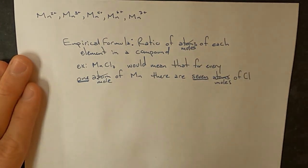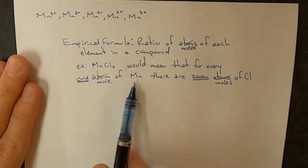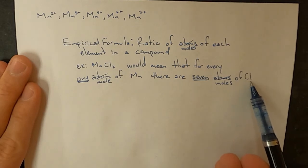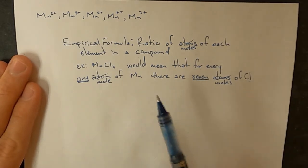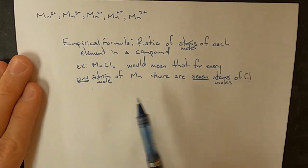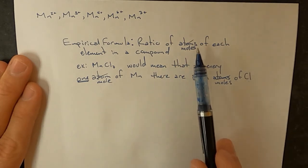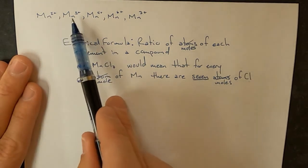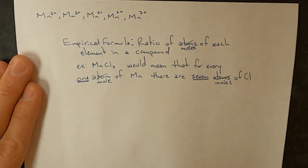And what that means is we could measure the mass of manganese in our compound that we created, and we could measure the mass of chlorine in our compound that we created, and we can convert them to moles. We'll look at the mole ratio, which will tell us the ratio of atoms in an empirical formula, which will tell us which of these charges, which oxidation state the manganese has.